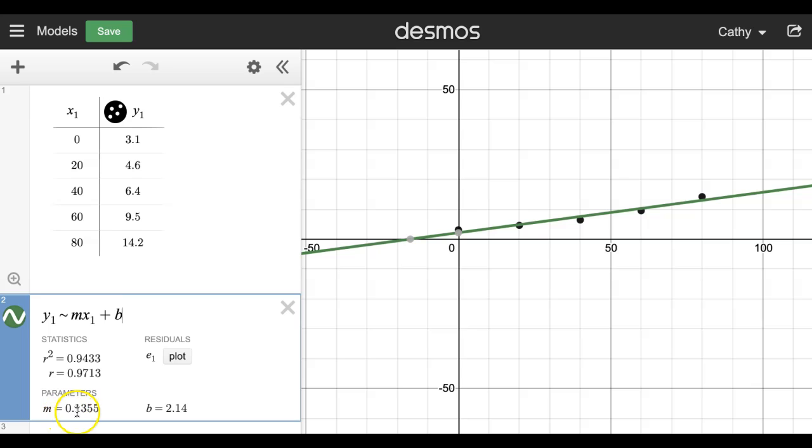The equation of my line would be y equals 0.1355x plus 2.14 would be the model, and this is how well it fits. So the closer this is to one, the better model you have. So this is 0.94. It's a pretty good model.